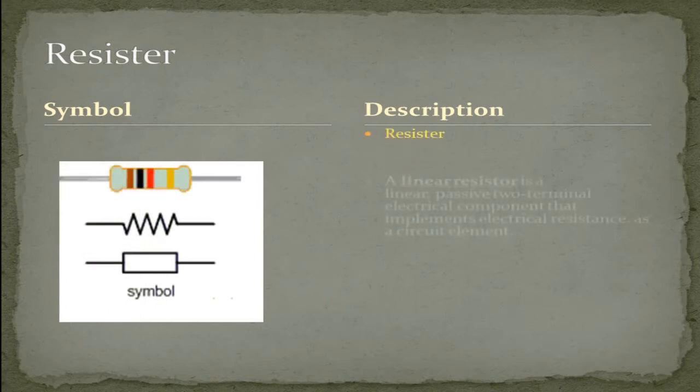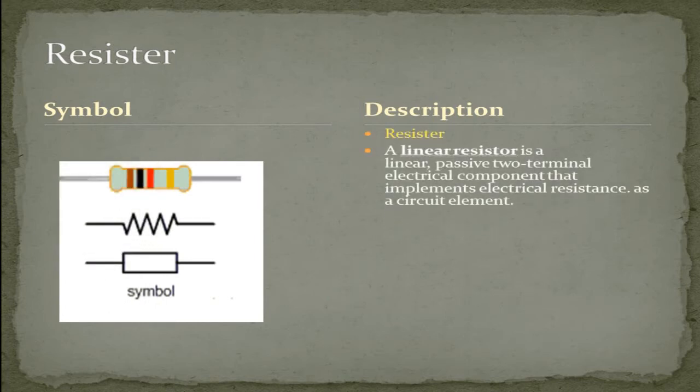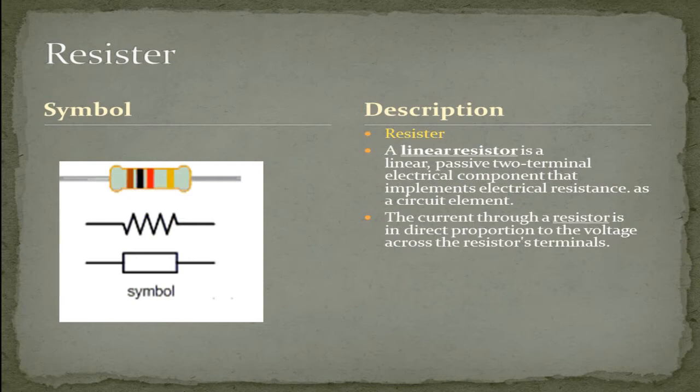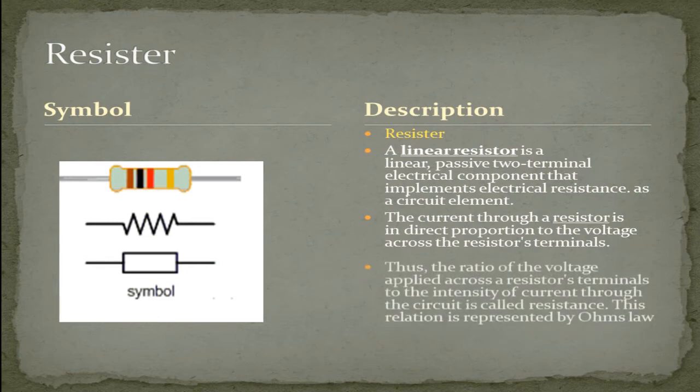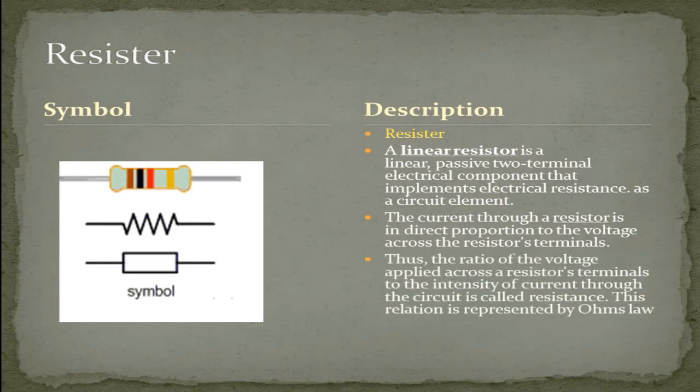The resistor. A linear resistor is a linear passive two-terminal electrical component that implements electrical resistance as a circuit element. The current through a resistor is in direct proportion to the voltage across the resistor's terminals. Thus, the ratio of voltage applied across the resistor's terminals to the intensity of current through the circuit is called resistance. This relation is represented by Ohm's law.